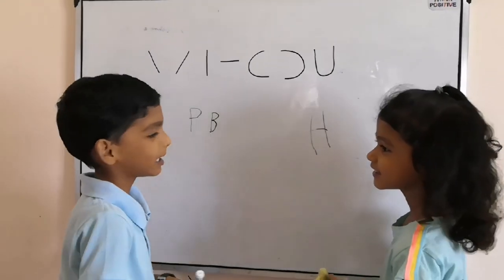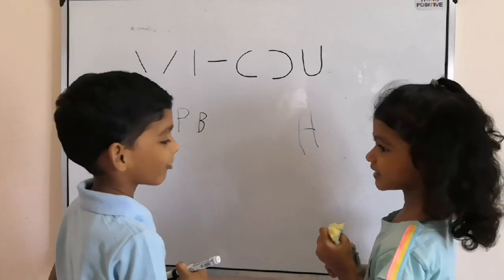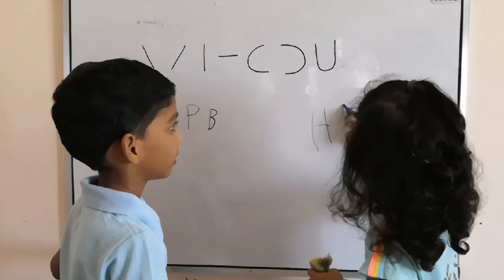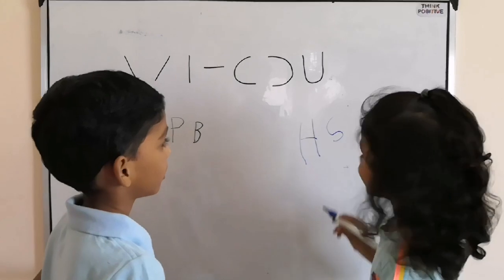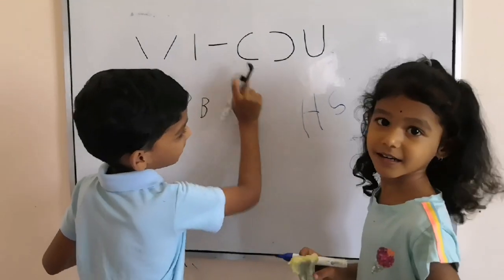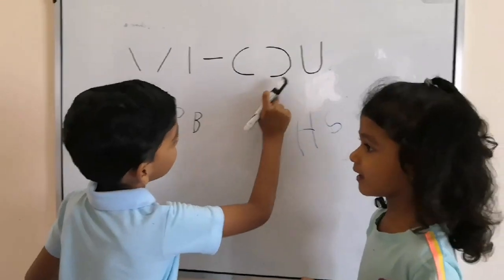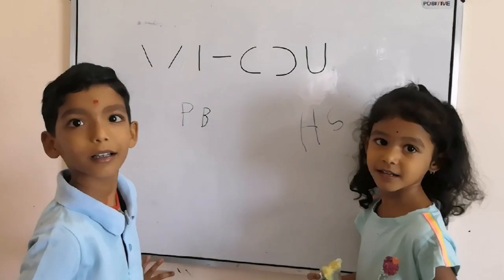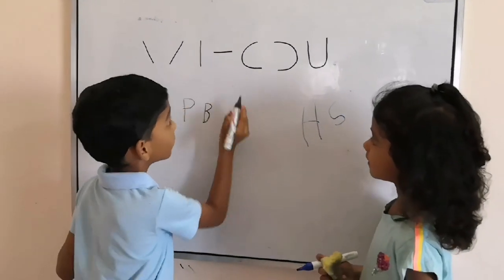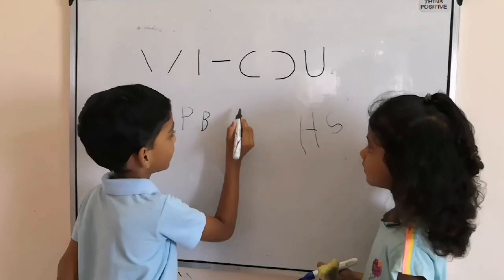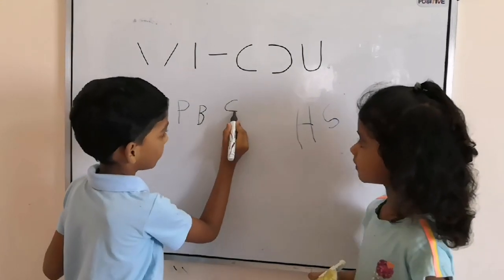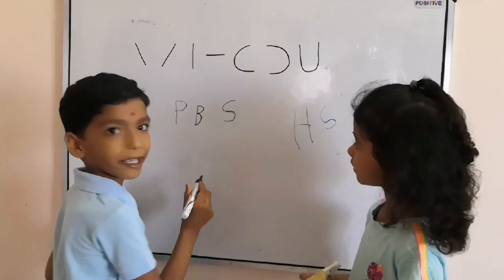When you write any alphabet — S. First this line and this line. You write and show. First this line, this one, this line, this one, and this one. S.